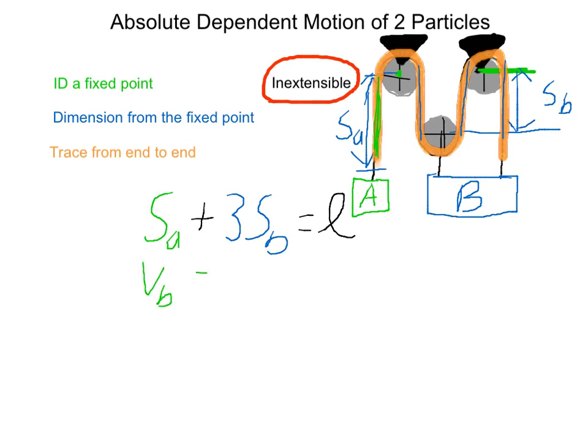So we can write that out: V sub A plus three V sub B equals zero. Finally, the acceleration of A plus three times the acceleration of B equals zero. And looking back, I noticed that I wrote V sub B, and that should be V sub A. Sorry about that.